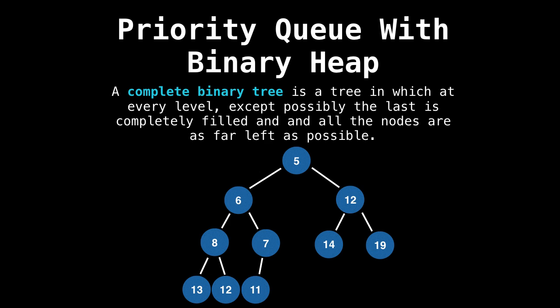As you will see, when we insert nodes, we always insert them at the bottom row as far left to meet this complete binary tree property.